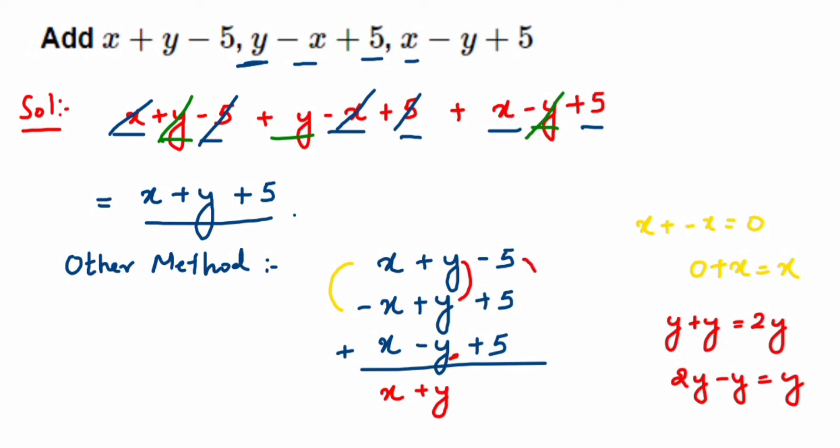For the constants: minus 5 plus 5 is zero, and zero plus 5 equals 5. So the third term is 5. We got the same answer: x plus y plus 5. I hope this is clear. If you have any questions, drop a comment below. Thank you for watching.